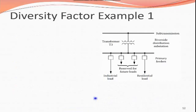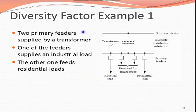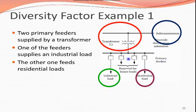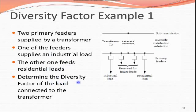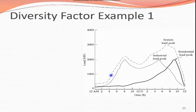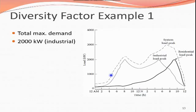Here is an example of diversity factor. In a diagram, we can see a sub-transmission line feeding a transformer, with primary feeders — one for residential load, one for industrial load, and two reserved for future loads. Two primary feeders are supplied by the transformer: one feeds industrial load, the other feeds residential loads. We need to determine the diversity factor of the load connected to the transformer.